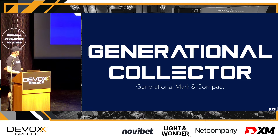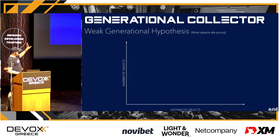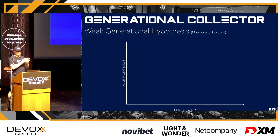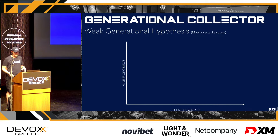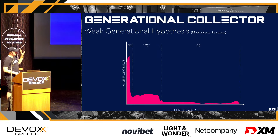Now we come to generational collection, which combines the previous strategies. This is based on the generational hypothesis: most objects die young. Scientists across all languages found that most created objects die very quickly, and only a few live for a long time. There's a characteristic chart showing many short-lived objects, fewer medium-lived, and very few long-lived ones.